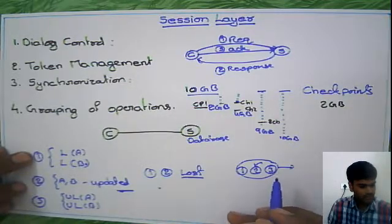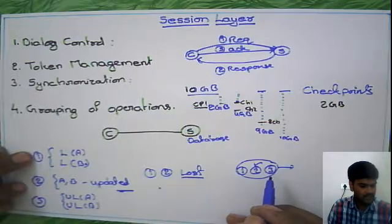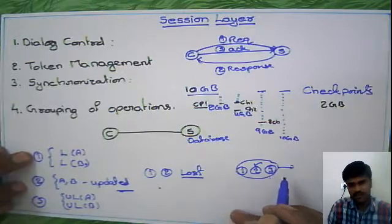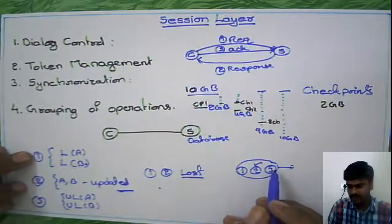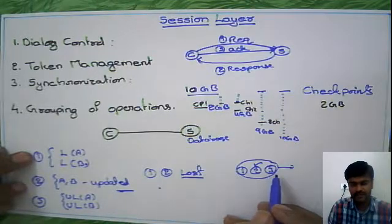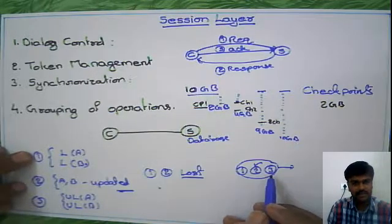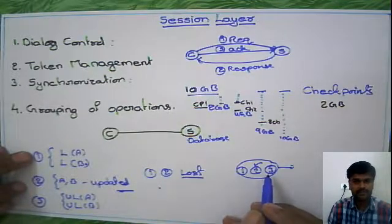Suppose if third packet is not received, session layer will not send the above packets, so that it will not lead to any problem. Even if third packet is not received in the session layer, if it is not there, it is not going to do any operations. So that's why you need to go for grouping of operations. This will be done by session layer.